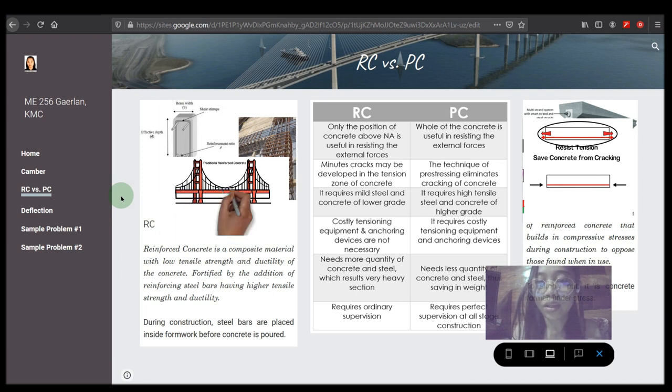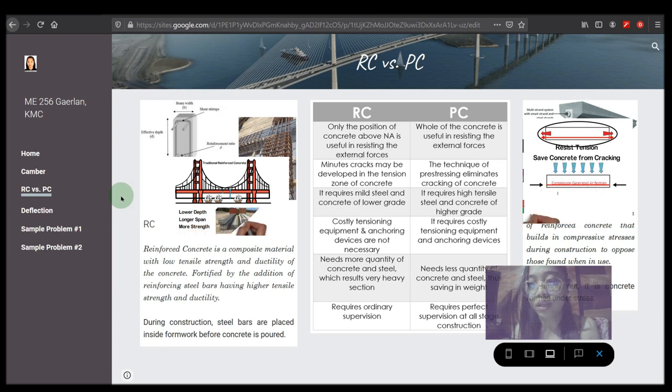In RC again, it needs more quantity of concrete which results in heavy sections, while in PC, this results in saving of materials because it needs less quantity of concrete and steel.